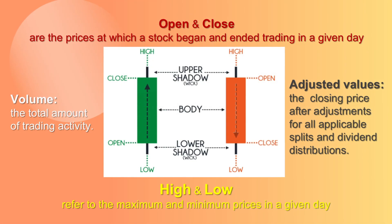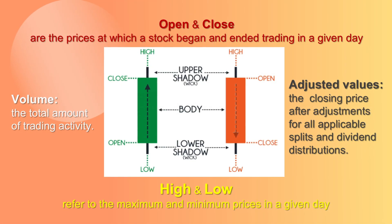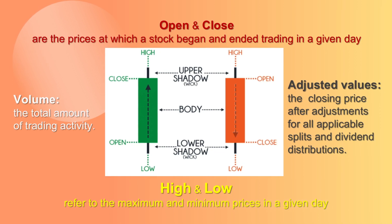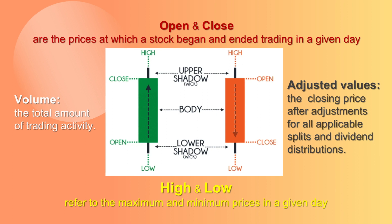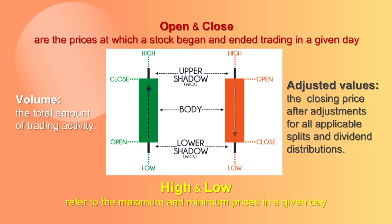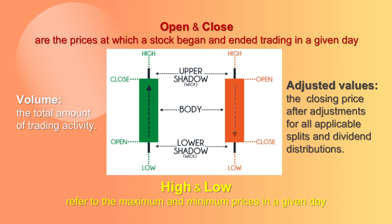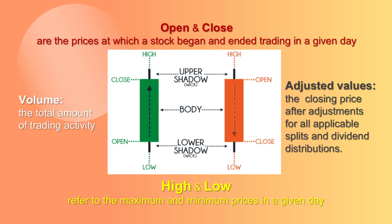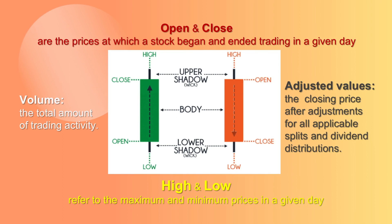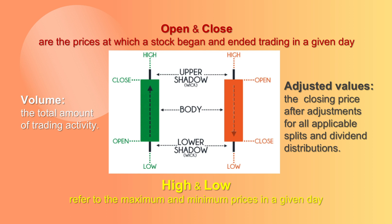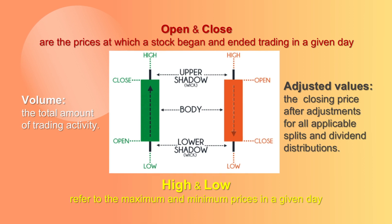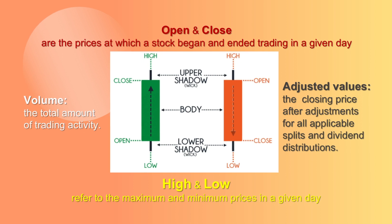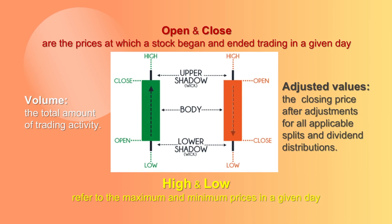In stock trading, the high and low refer to the maximum and minimum prices in a given day. Open and close are the prices at which a stock began and ended trading in the same day. Volume is the total amount of trading activity. And adjusted values factor in corporate actions such as dividends, stock splits, and new share issuance — in other words, it is a closing price after adjustment for all applicable splits and dividend distributions.